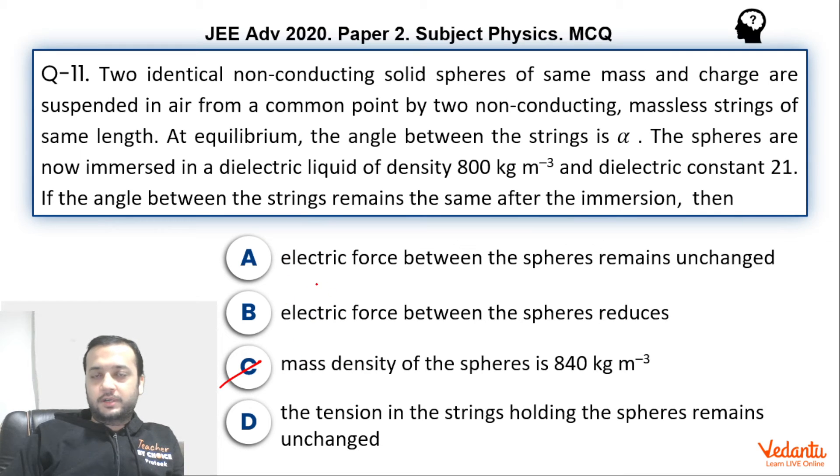Now the option A and B is what created the dilemma. IIT had given option B correct. So according to IIT these two were the correct options. They have said that electric force between these spheres will reduce. But I am sure that all of you know this. That electric force between these spheres does not reduce. Net force on these spheres will reduce. Because of the polarization of the medium.